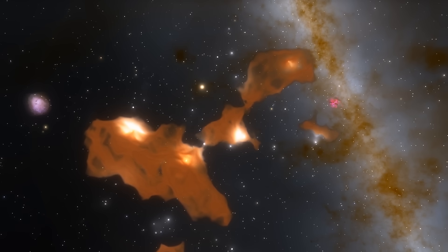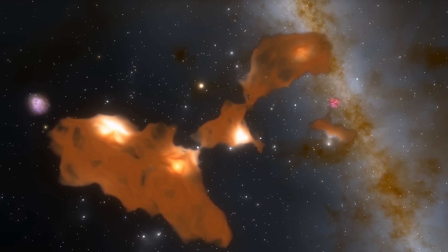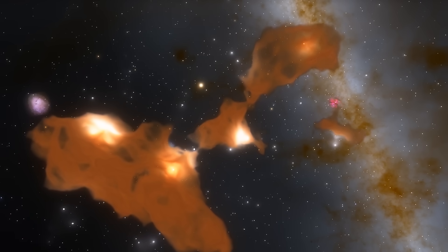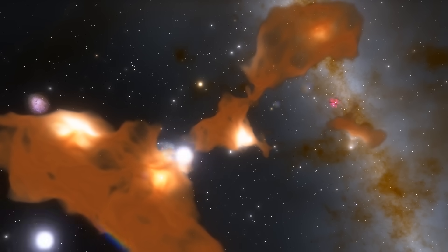And so here is the Omega Nebula, also known as the Swan Nebula, the Horseshoe Nebula, or more properly Messier 17 or NGC 6618.